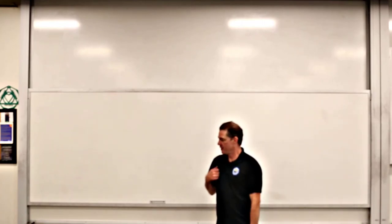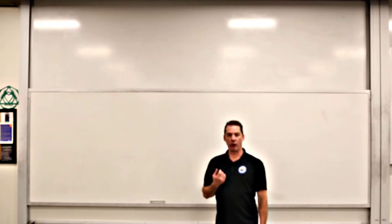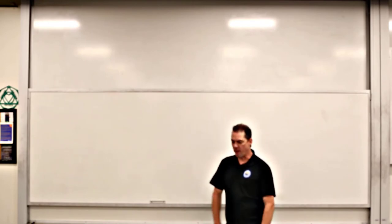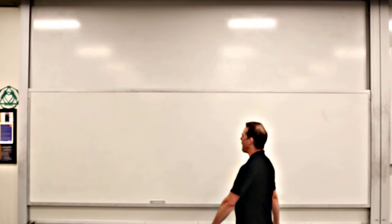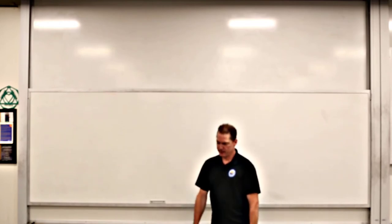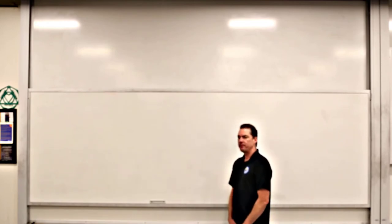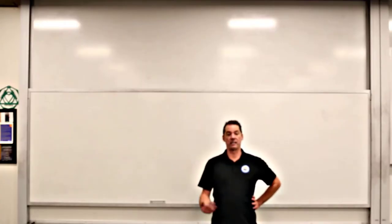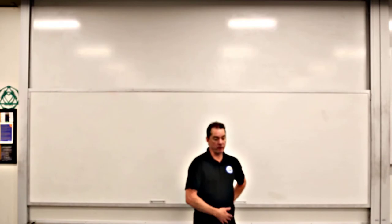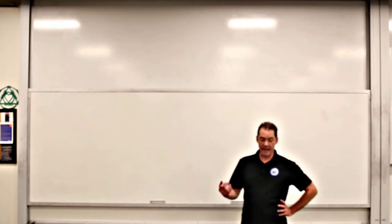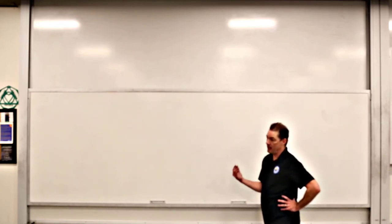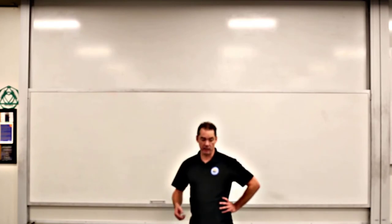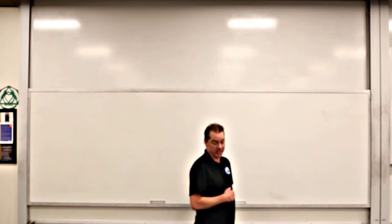Justin Miller here, Oxide College Physics. In this segment we're going to go ahead and do a couple problems involving some images formed by thin lenses. We've got a converging lens that has a focal length of 30 centimeters. We want to produce a proper ray diagram and determine the image distance, the orientation, and the lateral magnification along with the image type.